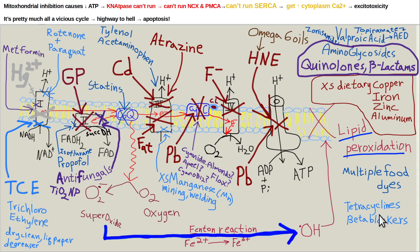Tetracycline antibiotics — how many kids take those for acne? Beta blockers also inhibit mitochondrial function. And excessive amounts of copper, iron, zinc, and aluminum are all toxic to mitochondria.